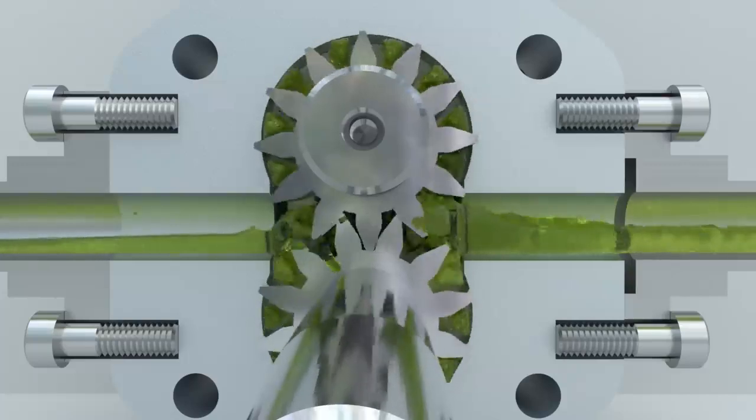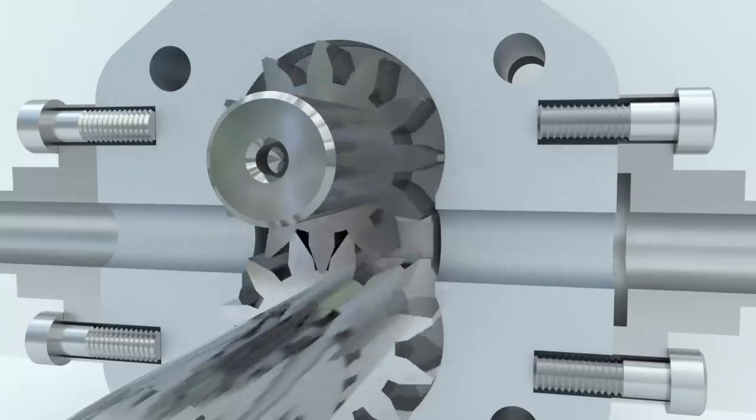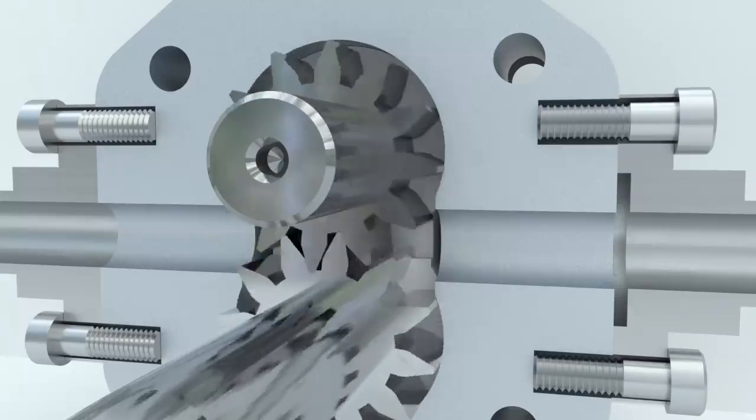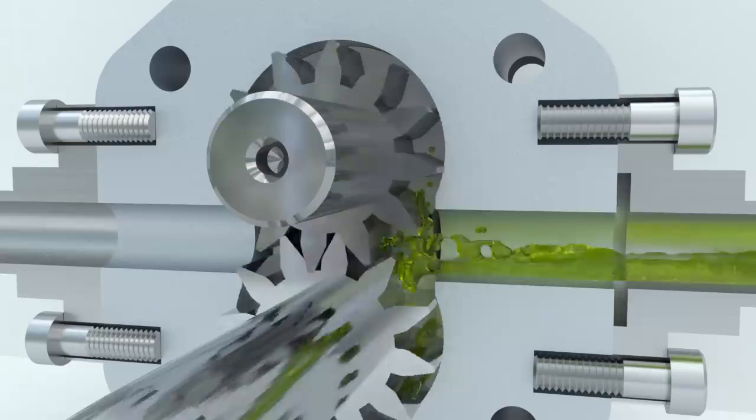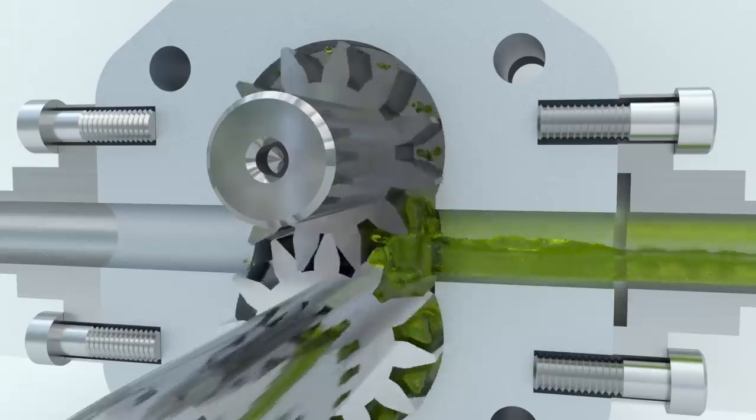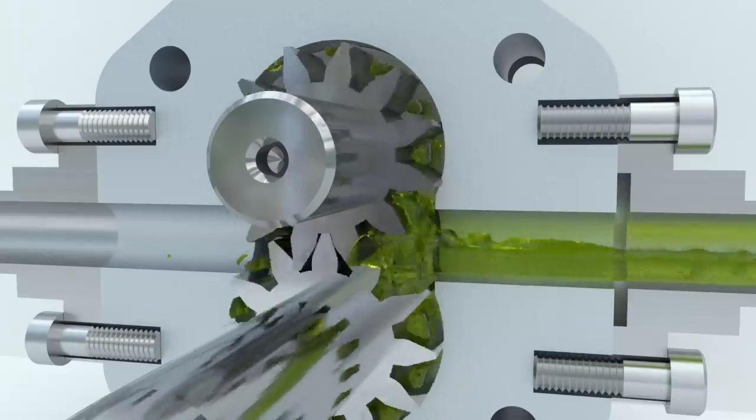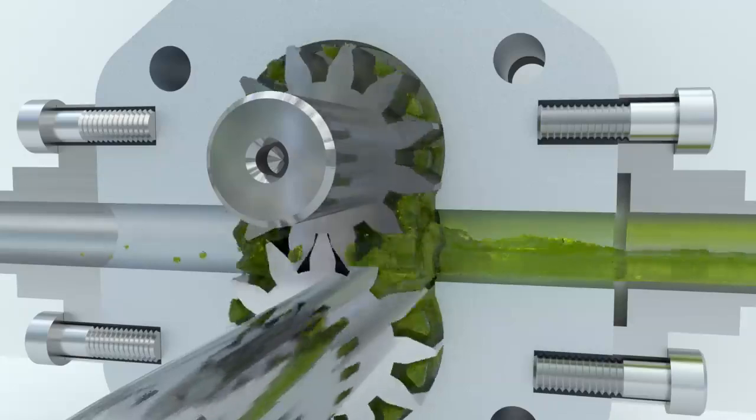It is important to understand that the fluid in the gear pump does not flow through the mesh. It cannot do so as the gaps in the mesh are very small. The fluid moves along the perimeter of the gears, filling the depressions between the gear teeth.